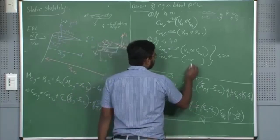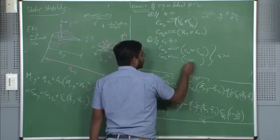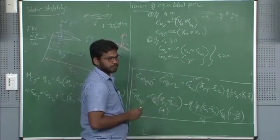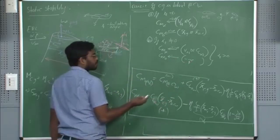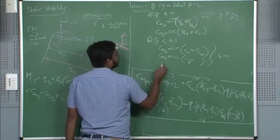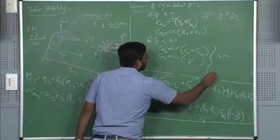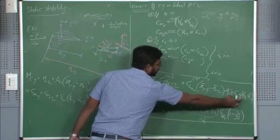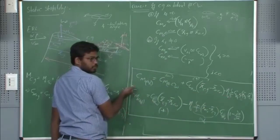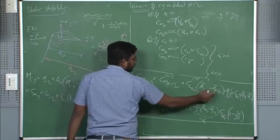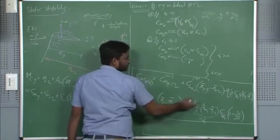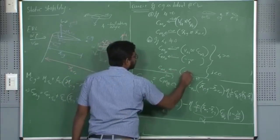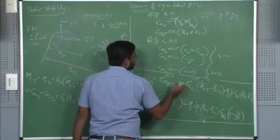At the same time, CM_0 will be more negative compared to the initial case — more negative compared to when i_t is 0. And if i_t is non-zero and negative, i_t less than 0, the tail contribution is positive towards CM_0. If the CG is behind the AC, this particular term is positive, so CM_0 will automatically become positive.